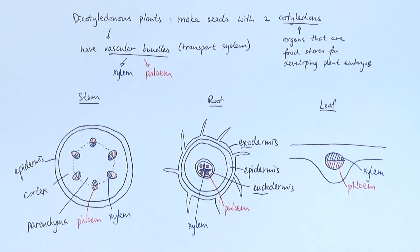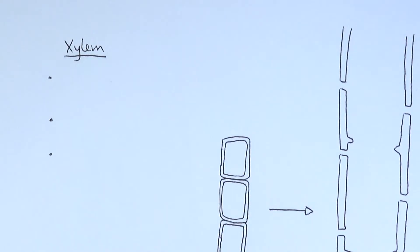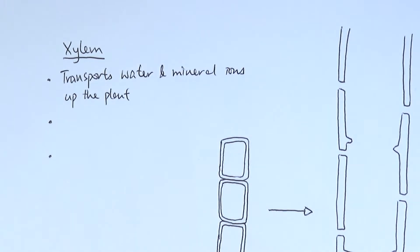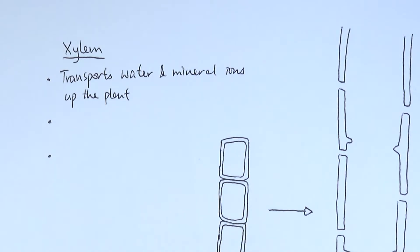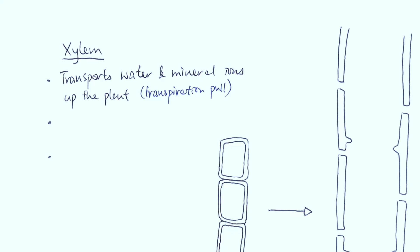Now we'll go into a little bit more detail about the structures of the xylem and phloem vessels themselves. The main function of the xylem is to transport water and mineral ions up the plant. The vascular bundle is their transport system in the plants, so the xylem specifically moves the water and mineral ions up from the roots, because the root is where we mainly get the water and the mineral ions. That movement is sometimes referred to as the transpiration stream.